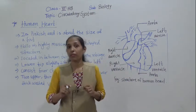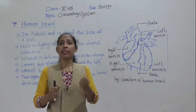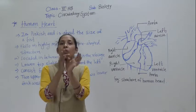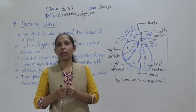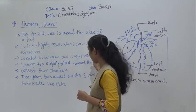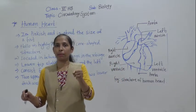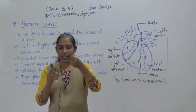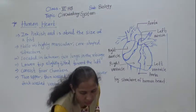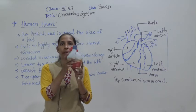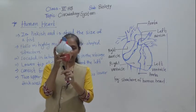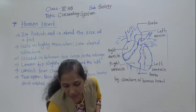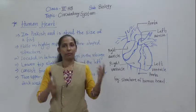The heart is located between the two lungs in the rib cage. It is situated at the center, between the two lungs, but the lower tip is slightly tilted towards the left. That is the reason we feel heartbeats on the left side.